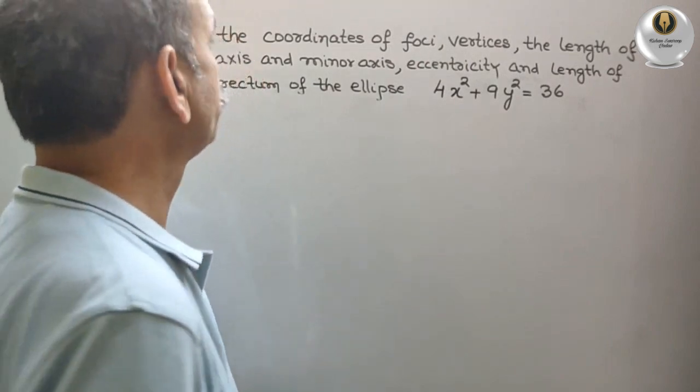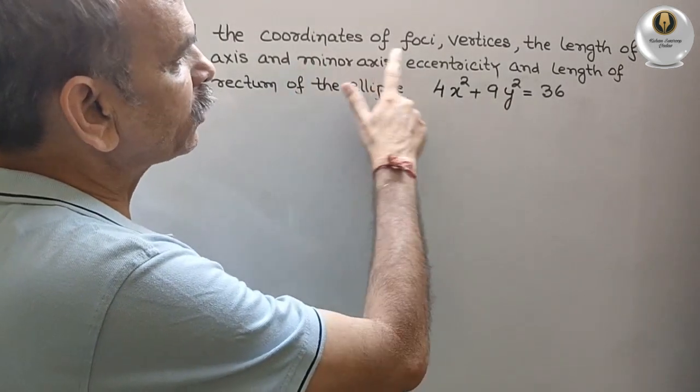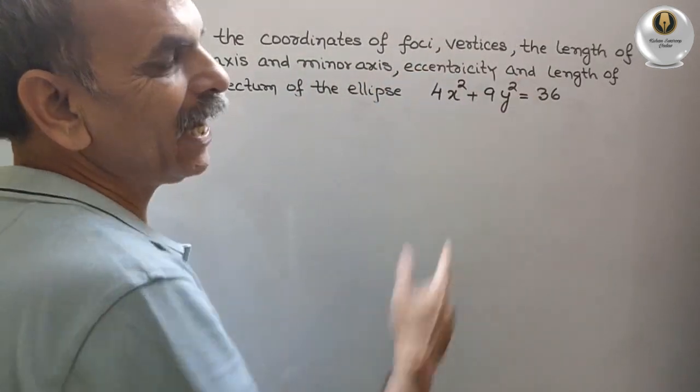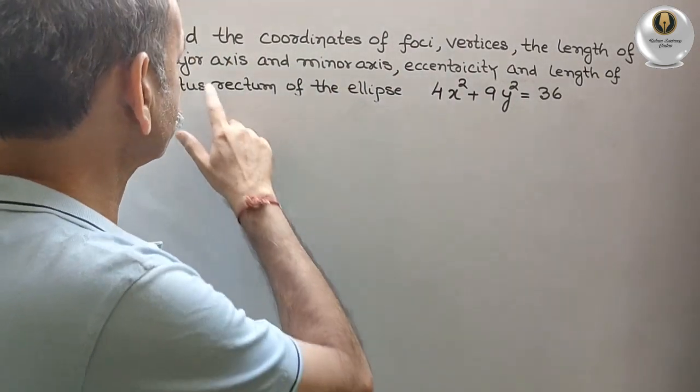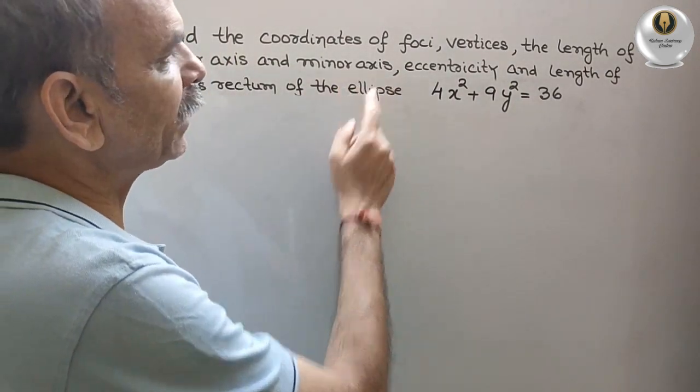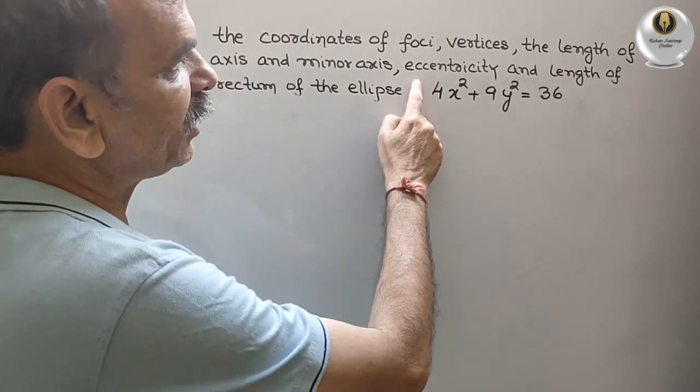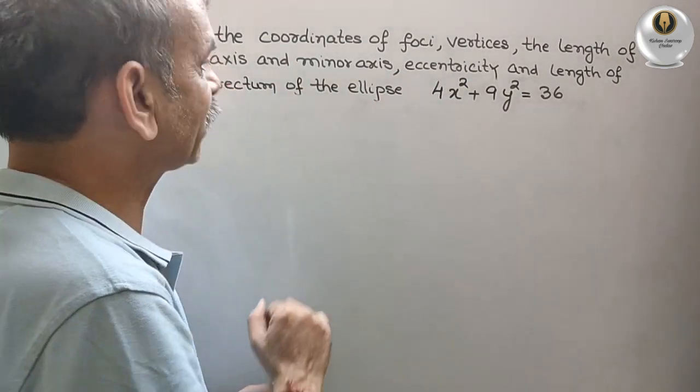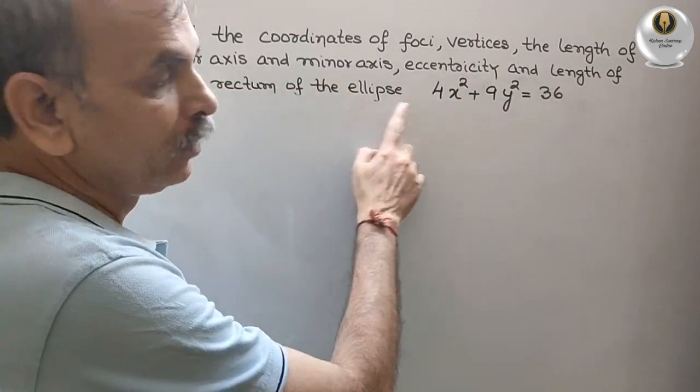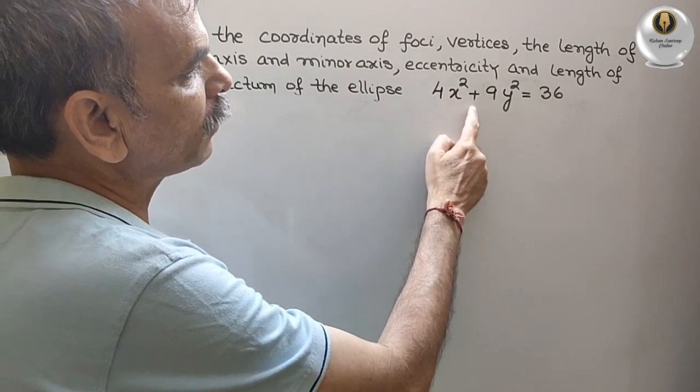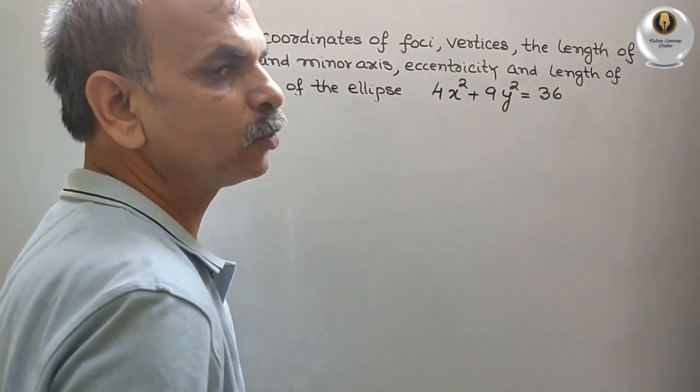Your question is, find the coordinates of foci, vertices and the length of major axis and minor axis, eccentricity and length of latus rectum of the ellipse. What they have given? 4x² + 9y² = 36.